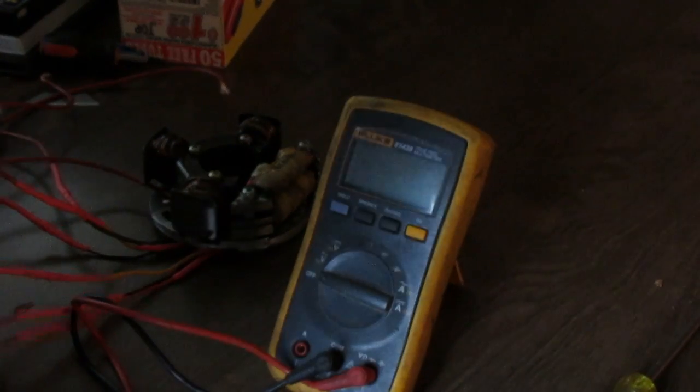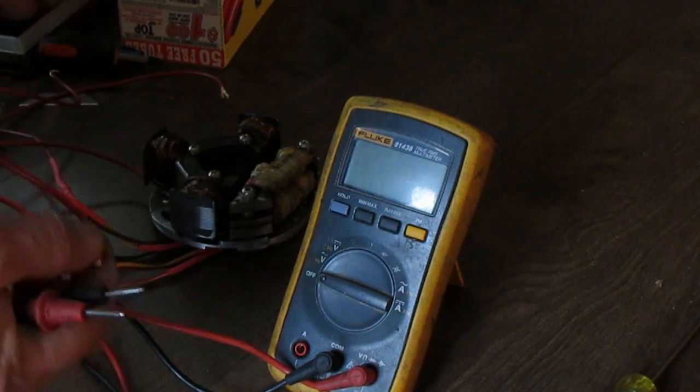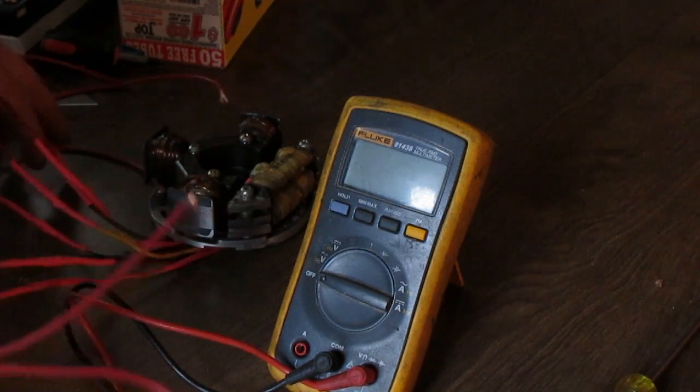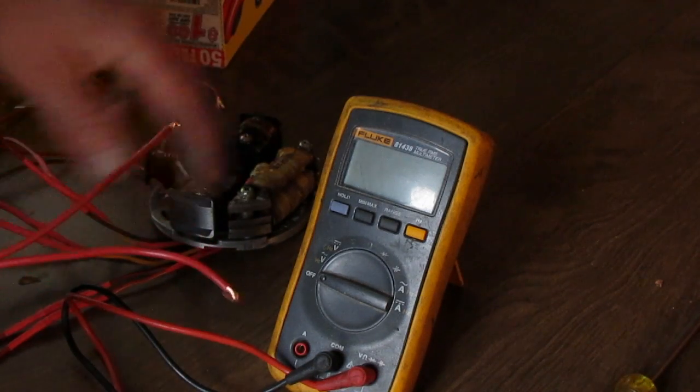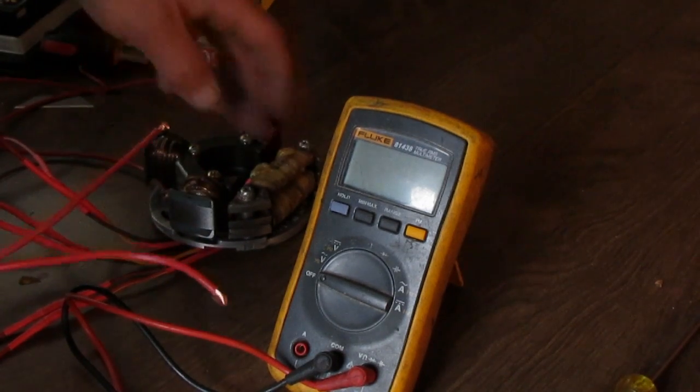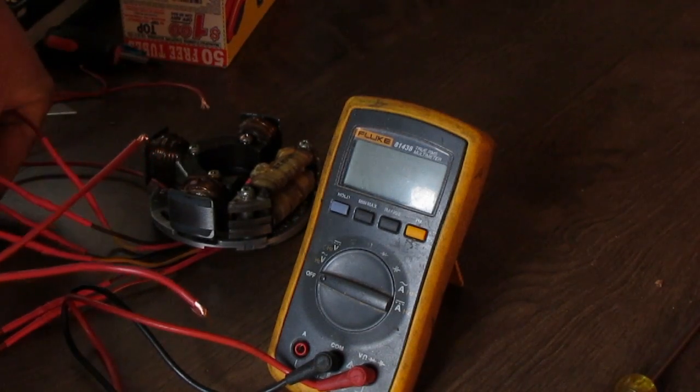Okay, in this video I'm going to show you guys how to bench test an Arctic Cat stator from the early 80s. What we've got is six leads coming out of the stator itself. Two are connected to the ignition coil, two are connected to the stator itself, and two are connected to ground.